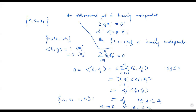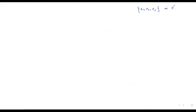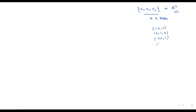Now suppose E1, E2, E3 are in R3. Since this is a linearly independent set of dimension 3, it automatically forms a basis — an orthonormal basis. In R3, the standard example is (1,0,0), (0,1,0), (0,0,1) — any 3 mutually perpendicular unit vectors. Similarly in R2, we have (1,0) and (0,1).